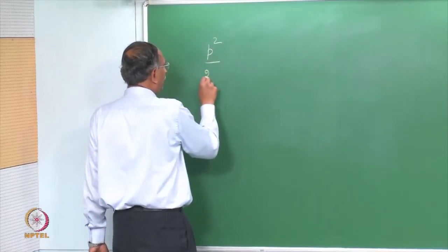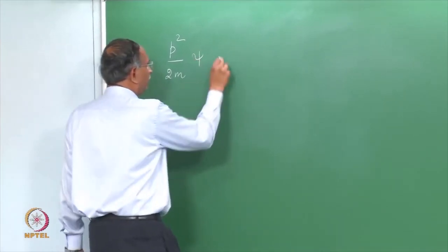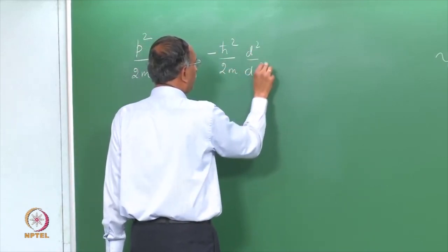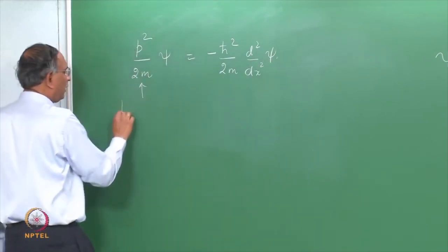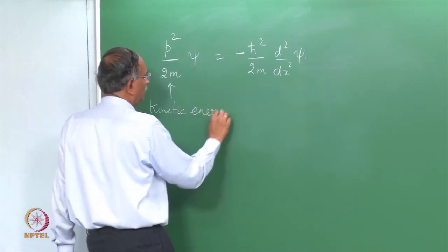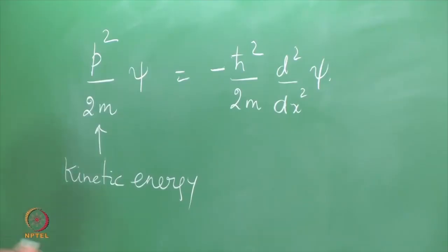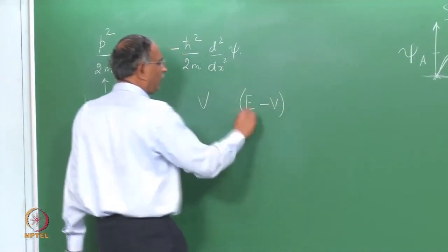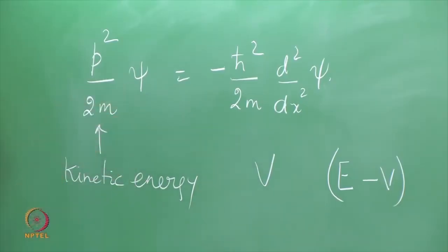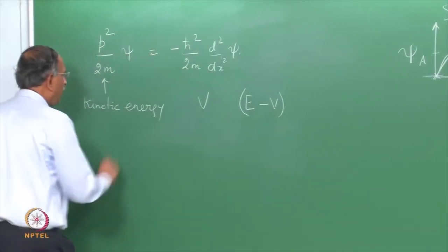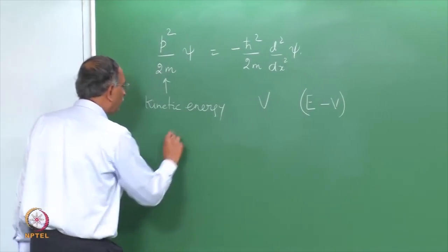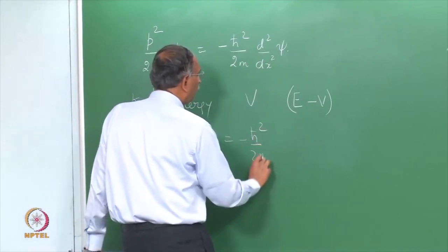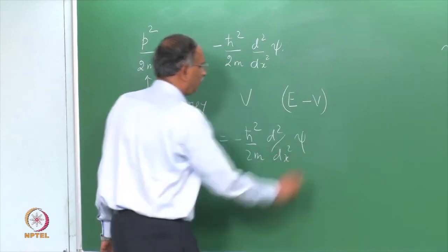Writing the kinetic energy p²/2m acting on ψ gives −ℏ²/(2m) · d²ψ/dx². The kinetic energy is the difference between the total energy E and the potential energy V, which may be a function of x. Therefore p²/2m equals (E − V) on ψ, giving −ℏ²/(2m) · d²ψ/dx² = (E − V)·ψ.